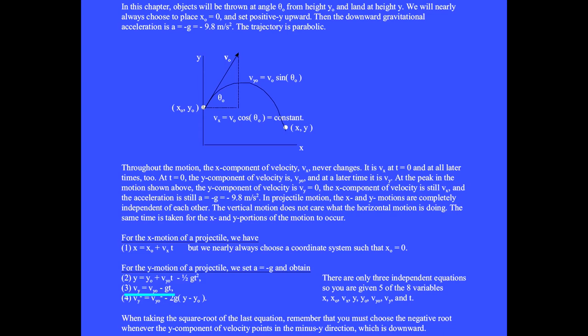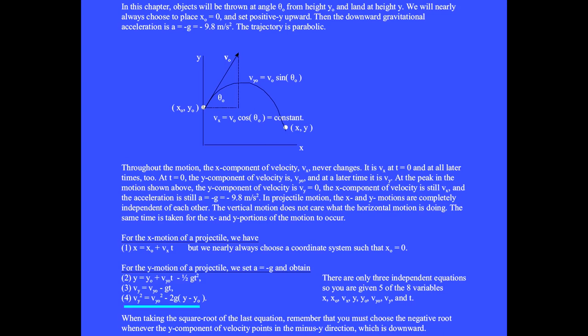Equation 3: v sub y equals v sub y 0 minus g t, where v sub y is the velocity at a later time and v sub y 0 is the y component of velocity at t equals 0. Combining equations 2 and 3, we get equation 4: v sub y squared equals v sub y 0 squared minus 2g times (y minus y sub 0). There are only 3 independent equations, so you are given 5 of the 8 variables. When solving a homework problem, make a list of 8 variables, fill in the 5 that are given, and look for a usable equation. When taking the square root of equation 4, choose the negative root whenever the y component of velocity points in the minus y direction, which is downward.